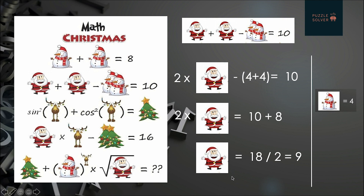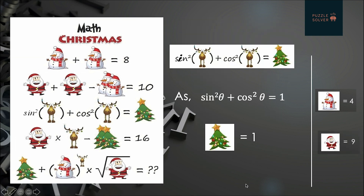So Santa's value will be equal to 18 ÷ 2 = 9. By the end of the second equation we have two values: one snowman is equal to four and one Santa is equal to nine.